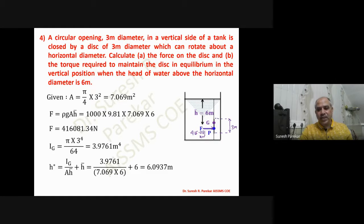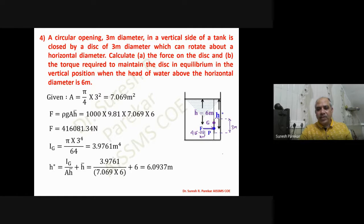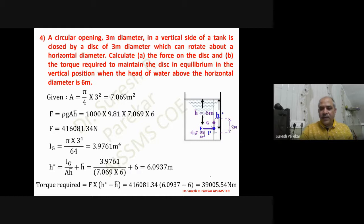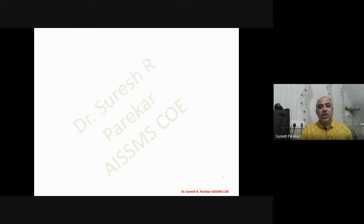To find the torque, we take the moment about the centroid (center of gravity). The torque = (h* − h̄) × F, which gives us 3900... 5.54 kilo Newton meters, so the torque required is approximately 13.9 kilo Newton meters.